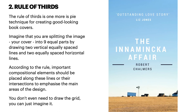The rule of thirds is one more technique for creating good-looking book covers. Imagine splitting your cover into nine equal parts by drawing two equally spaced vertical lines and two equally spaced horizontal lines. According to the rule, important compositional elements should be placed along these lines or their intersections to emphasize the main areas of your design. You don't even need to draw the grid — you can just imagine it. You can see the thirds: the top line, the title and author, and the image at the bottom.